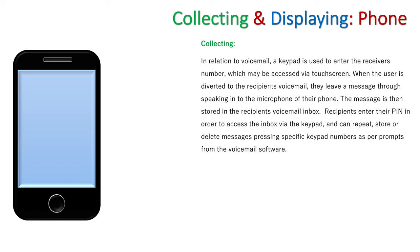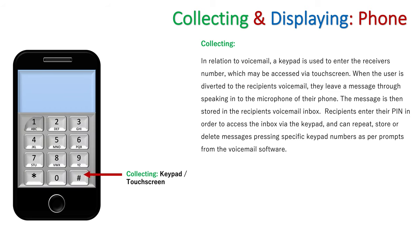Let's have a look at the collection devices on the phone. Firstly, the keypad, which is available on a touchscreen on a mobile phone. We press the appropriate keypad numbers to dial into our voicemail inbox, as well as press the numbers of the prompts we're being told in order to repeat messages, play the next message, or delete a message.